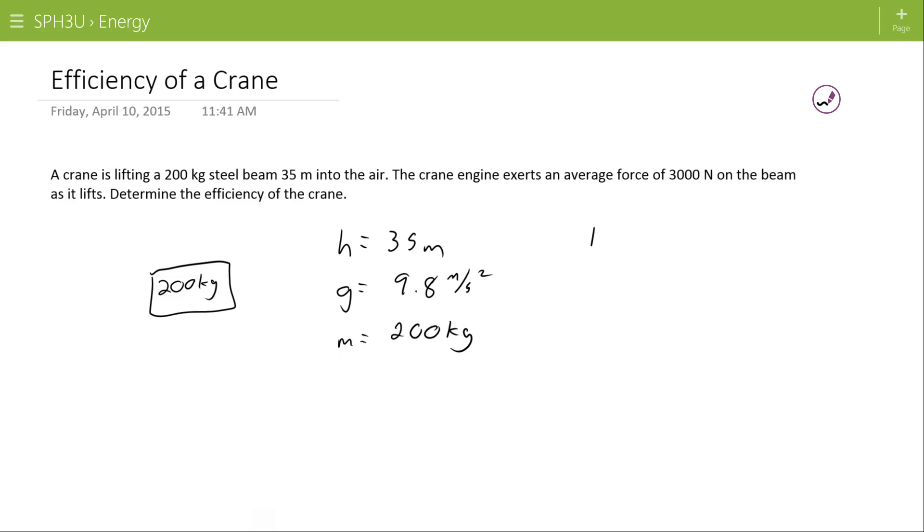In order to achieve this, a force applied of 3,000 newtons was used. Here, we can imagine if the height is 35 meters, as in it started at zero and it went up by 35 meters, then the distance that this beam would have traveled through as it was moving up is 35 meters.